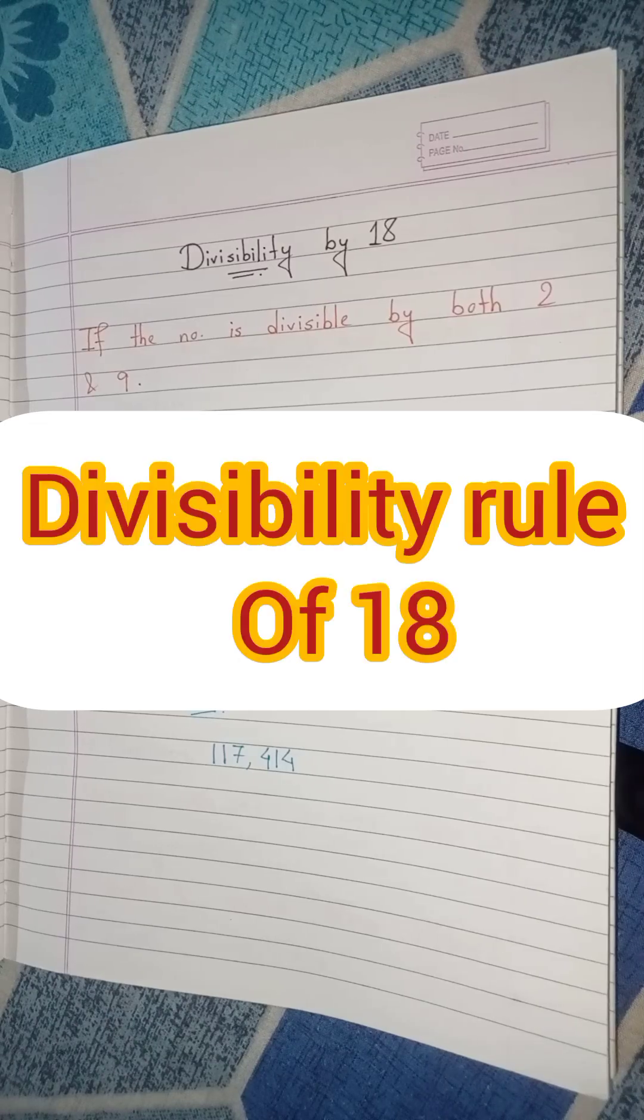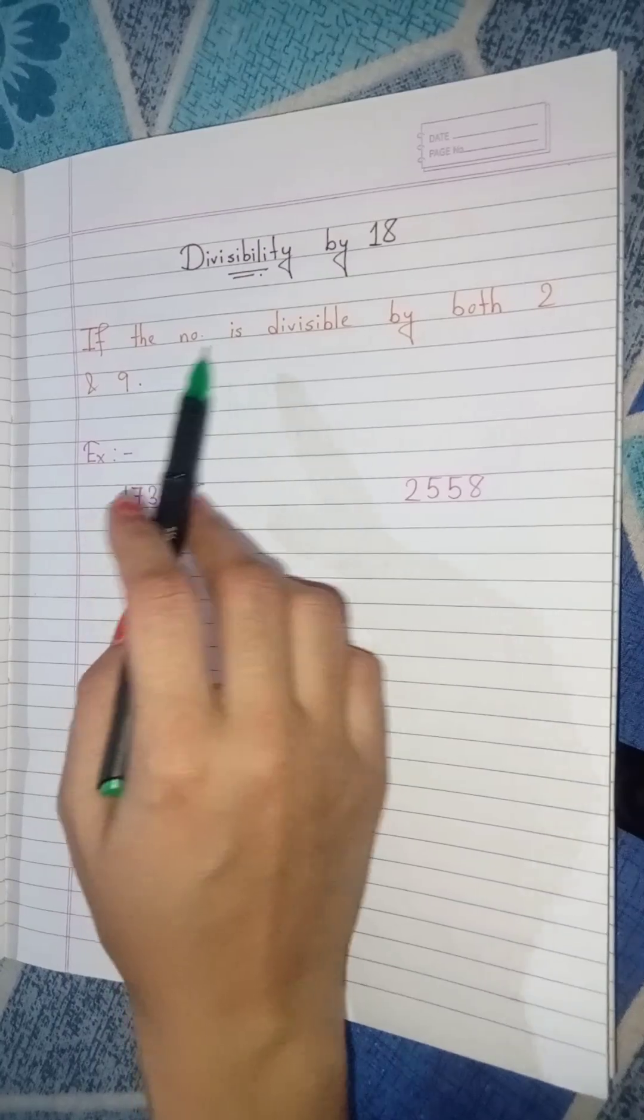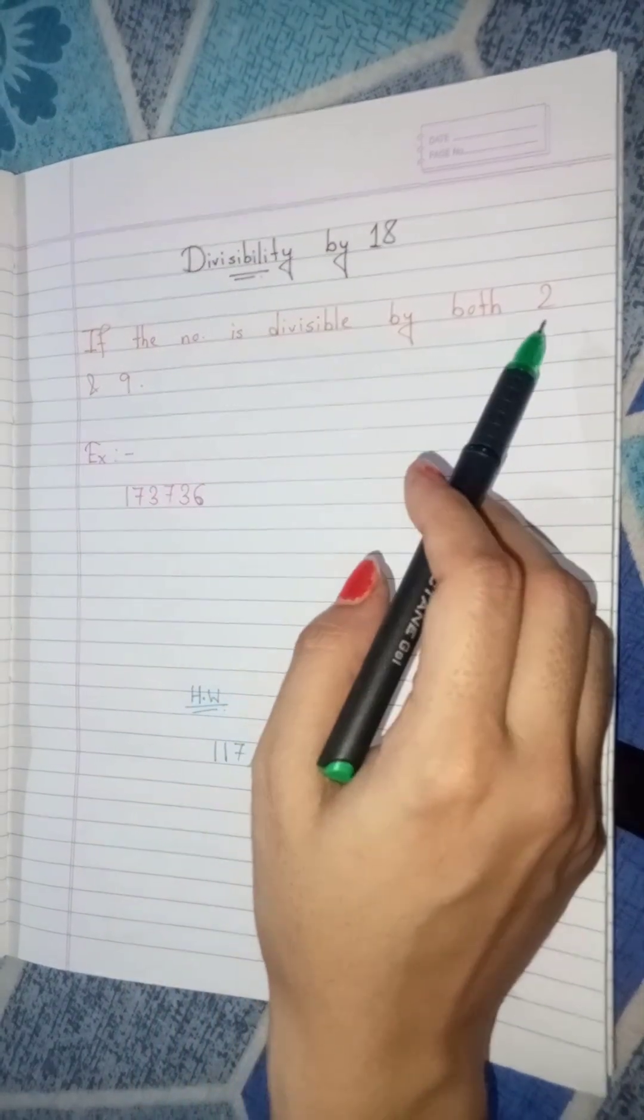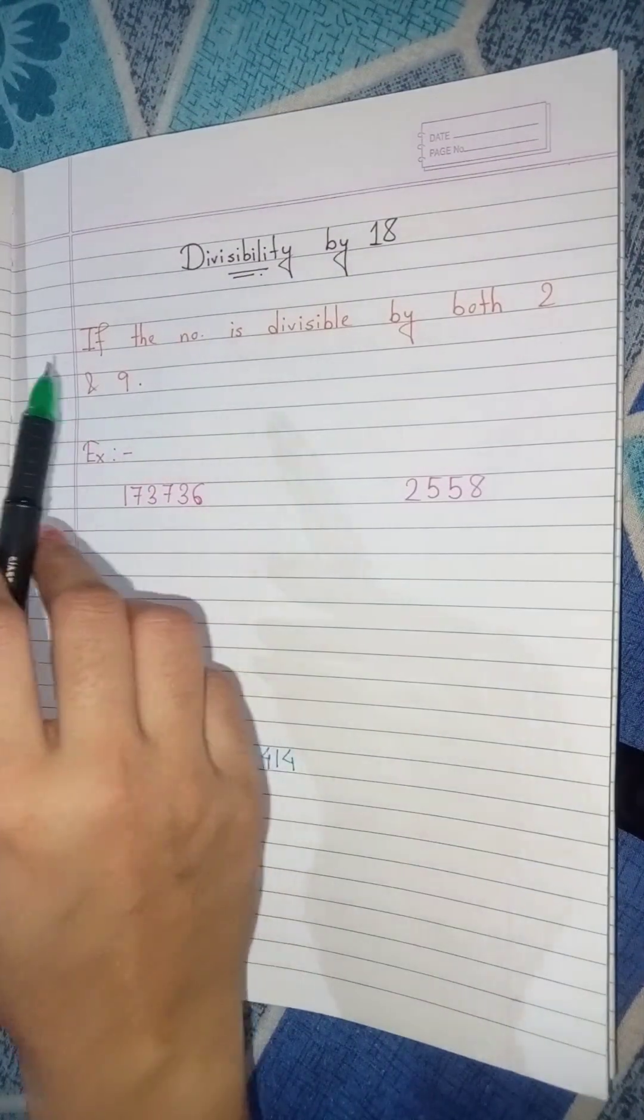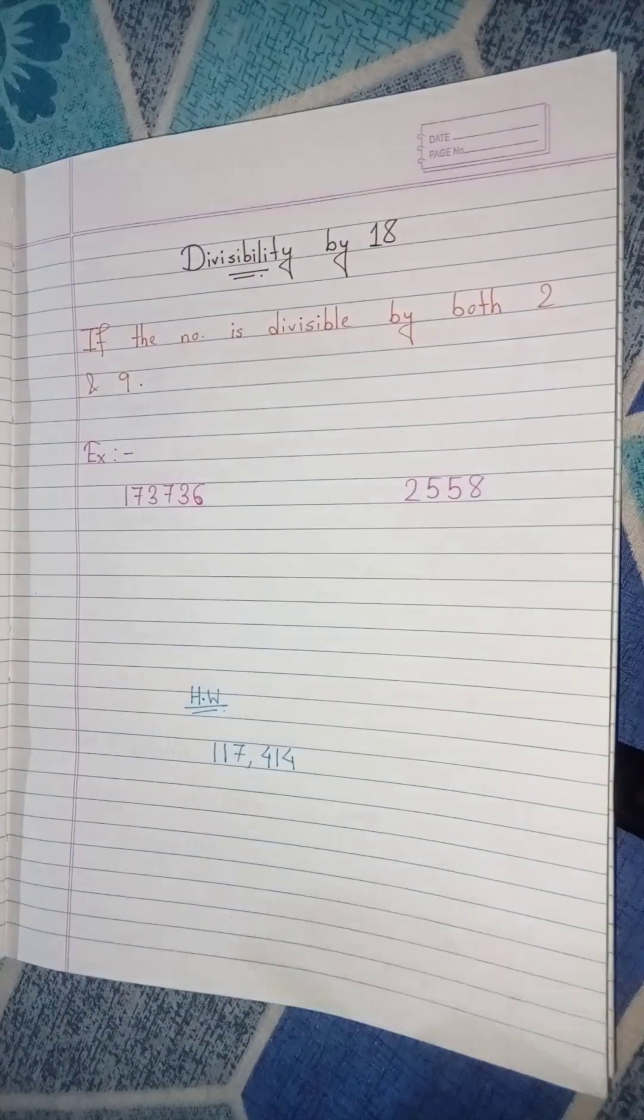Today we are going to discuss divisibility rule by 18. If the number is divisible by both 2 and 9, then the number is obviously divisible by 18.